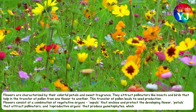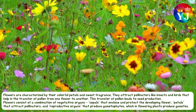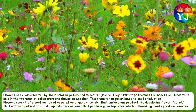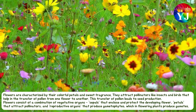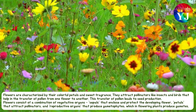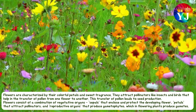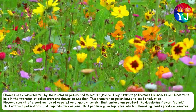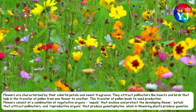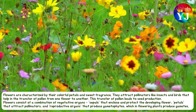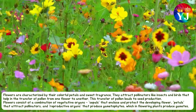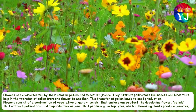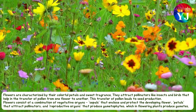Flowers attract pollinators like insects and birds that help in the transfer of pollen from one flower to another. This transfer of pollen leads to seed production. Flowers consist of a combination of vegetative organs: sepals that enclose and protect the developing flower, petals that attract pollinators, and reproductive organs that produce gametophytes, which in flowering plants produce gametes.